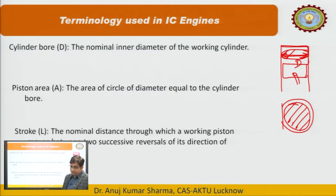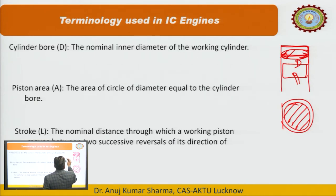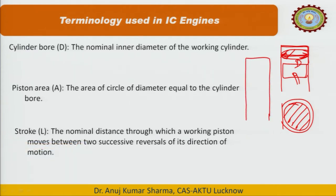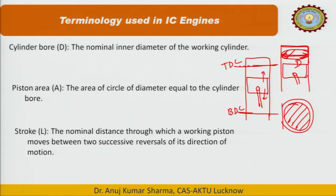The stroke is the nominal distance through which a working piston moves between two successive reversals of its direction of motion. The piston moves between two positions: the topmost point is known as top dead centre, and the bottommost point is known as bottom dead centre. The distance travelled by the piston between TDC and BDC is known as the stroke length, represented as L.